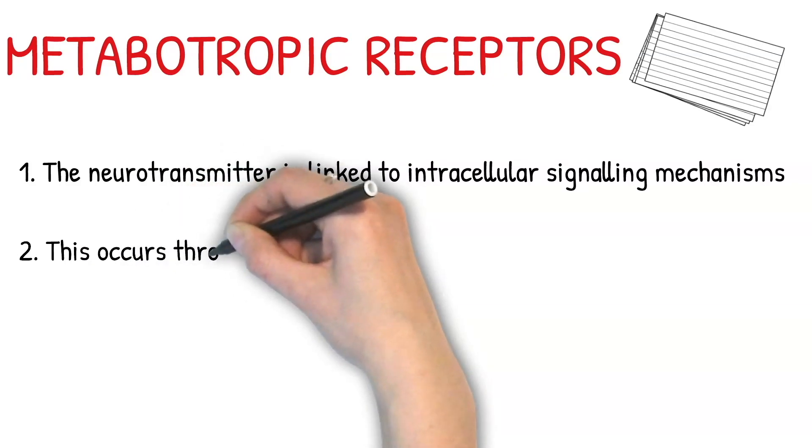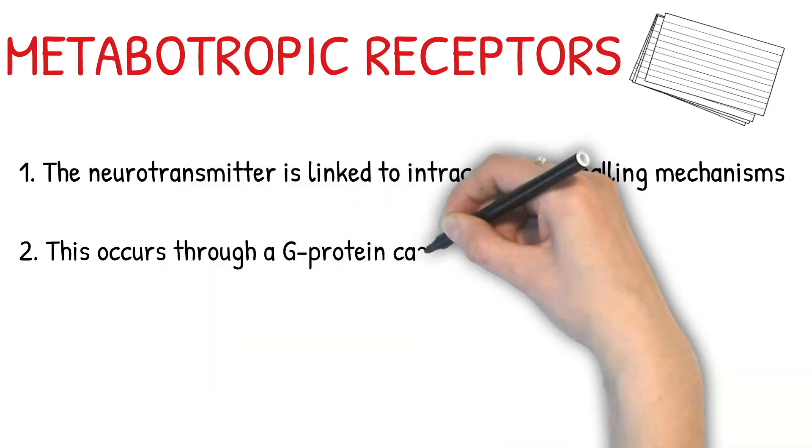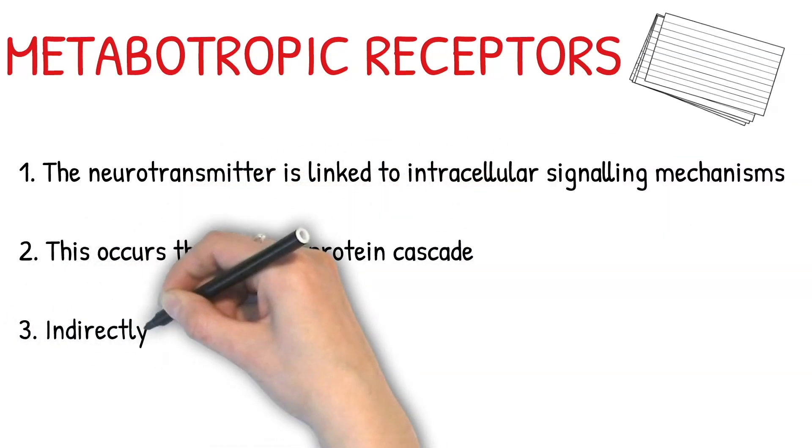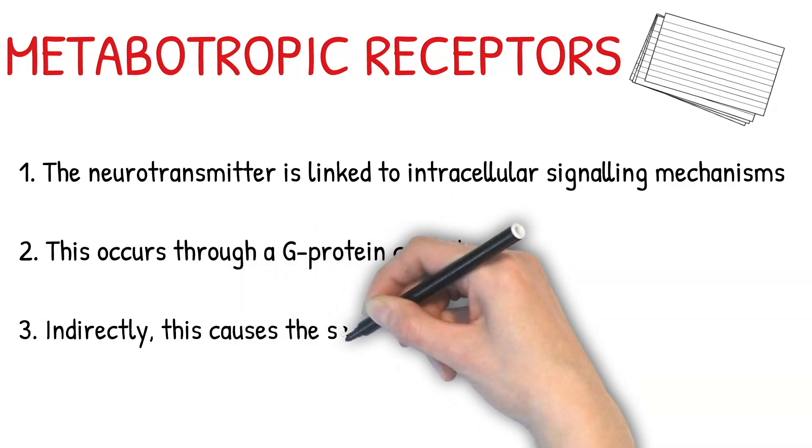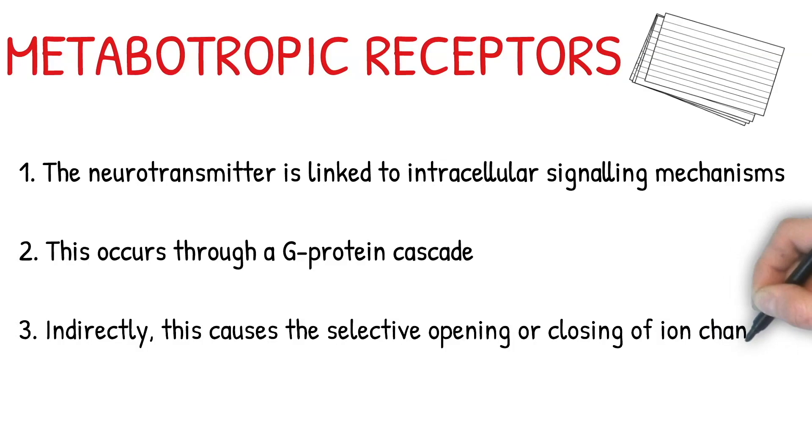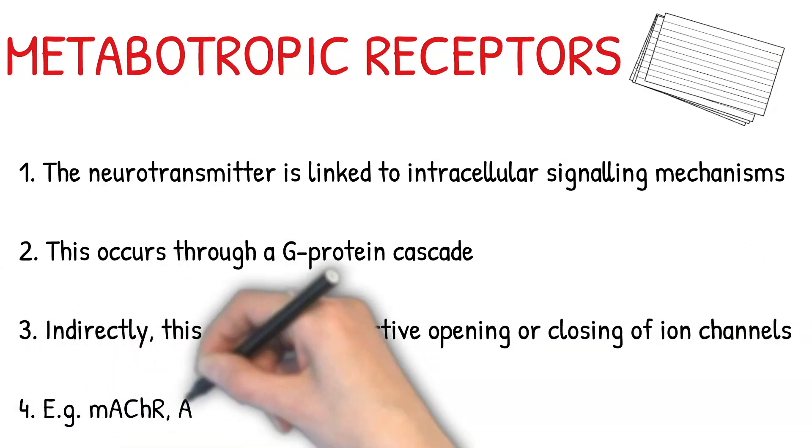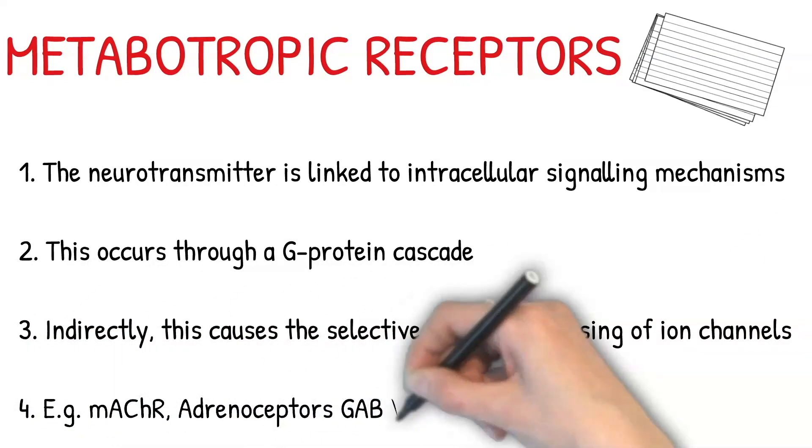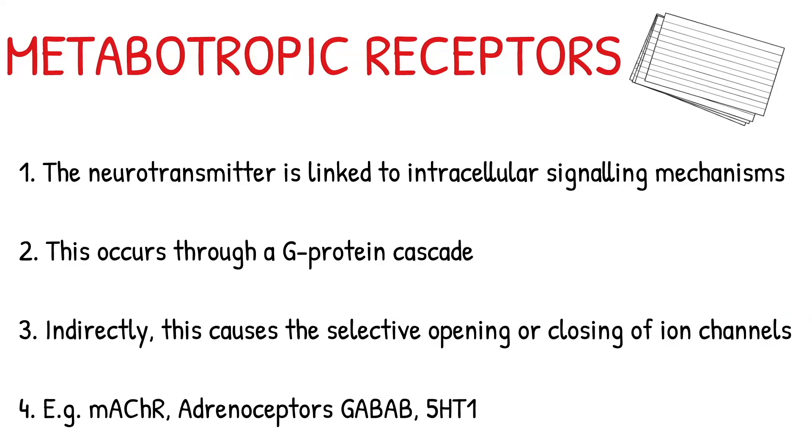For this reason, metabotropic receptors are often called G protein coupled receptors. Some examples of metabotropic receptors include muscarinic acetylcholine receptors, adrenosceptors, GABA-B receptors, and serotonin type 1 receptors.